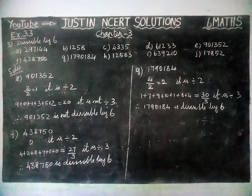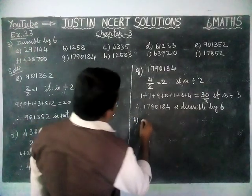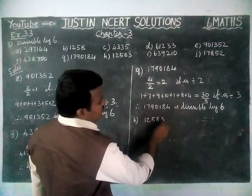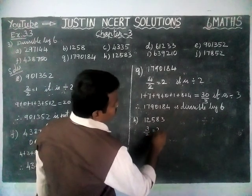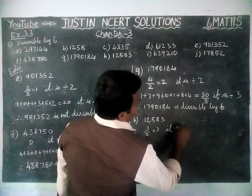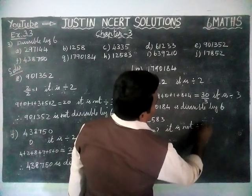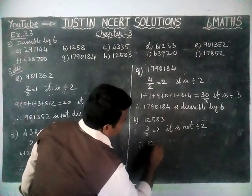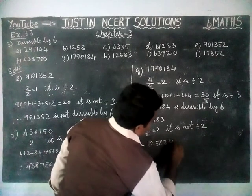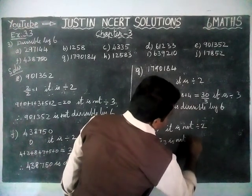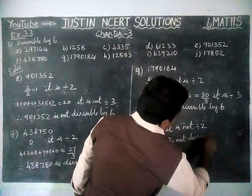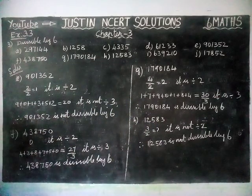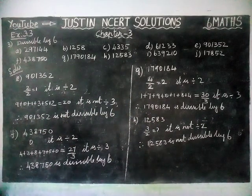Now, we are going to check it for option H. Here, the last digit, the 1's place is 3. This 3 is not divisible by 2. Therefore, it is not divisible by 2, and thus the given number is not divisible by 6.